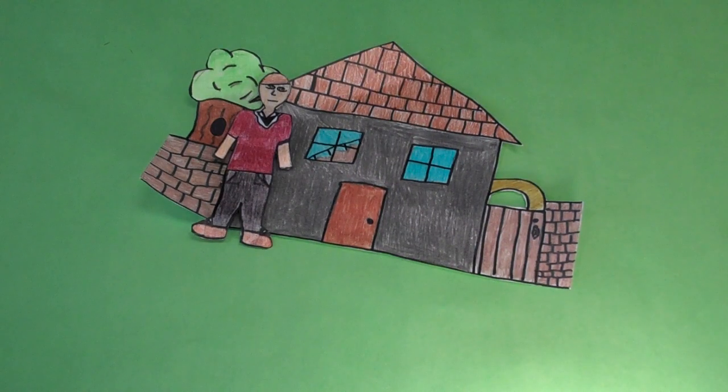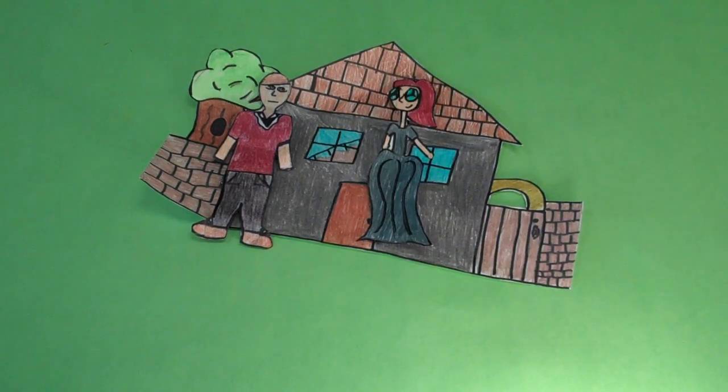Once they got to the new house in Outwith, Bruno had a fight with his mother about the new house. Bruno stormed up to his room and looked out the window and saw a fence.